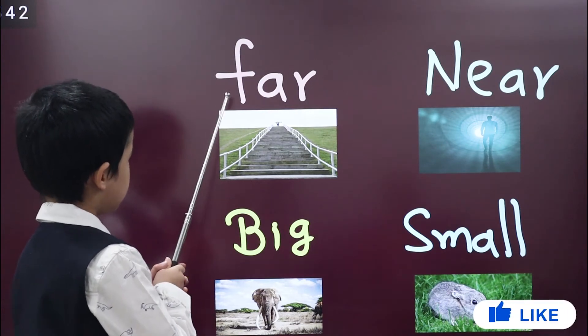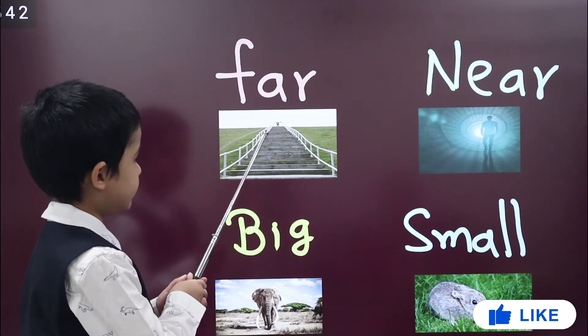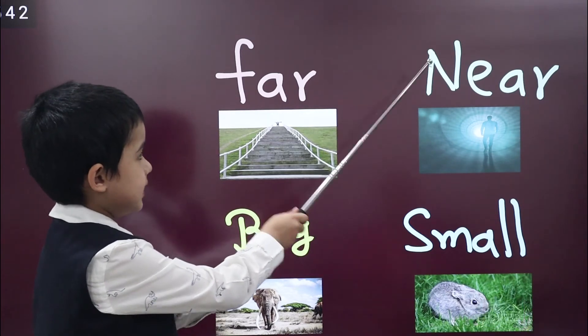This is next word, far. This man is very far. Opposite of far is near. This man is very near the light.